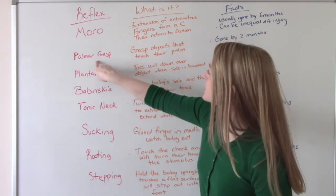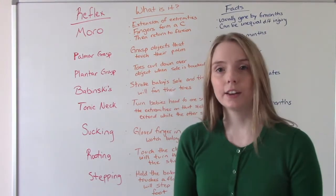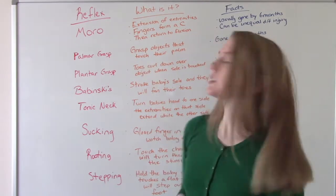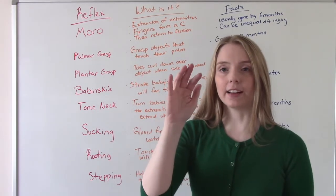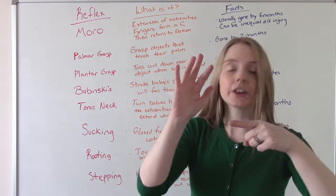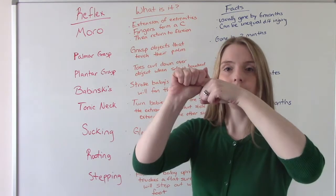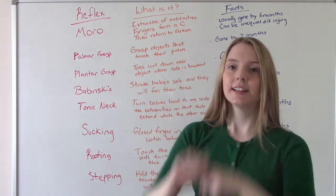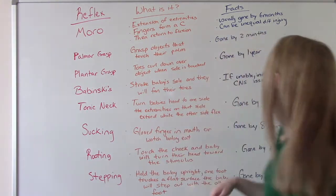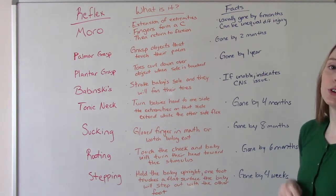The Palmer grasp is probably one you've done, you just didn't know it was called the Palmer grasp. What happens is baby has their little hand, and then you take your finger or some object and put it on their palm. What do they do? They wrap their fingers around you. They always grab you. That's the Palmer grasp. This is usually gone by two months.